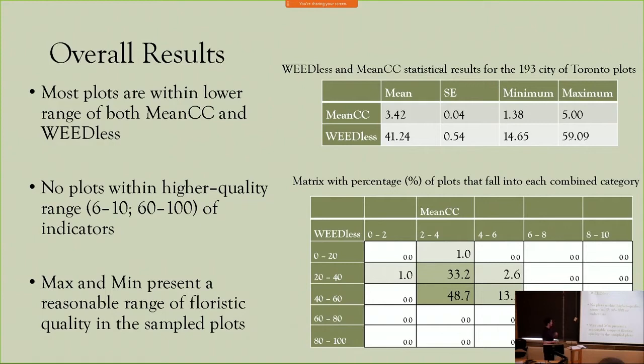It was tempting to compare these scores to other studies using the mean CC and weedless indicators. However, it's important to note that we did not include any wetlands in our sampling, and these areas typically receive higher mean CC scores, so comparing them to other urban studies would be a little misleading. Similarly, in the Lake Simcoe monitoring project, many plots received a weedless score of 100 indicating no non-native plants — reflecting the difference between these two landscapes, as Toronto is much more built up and has a higher density of urban activity.